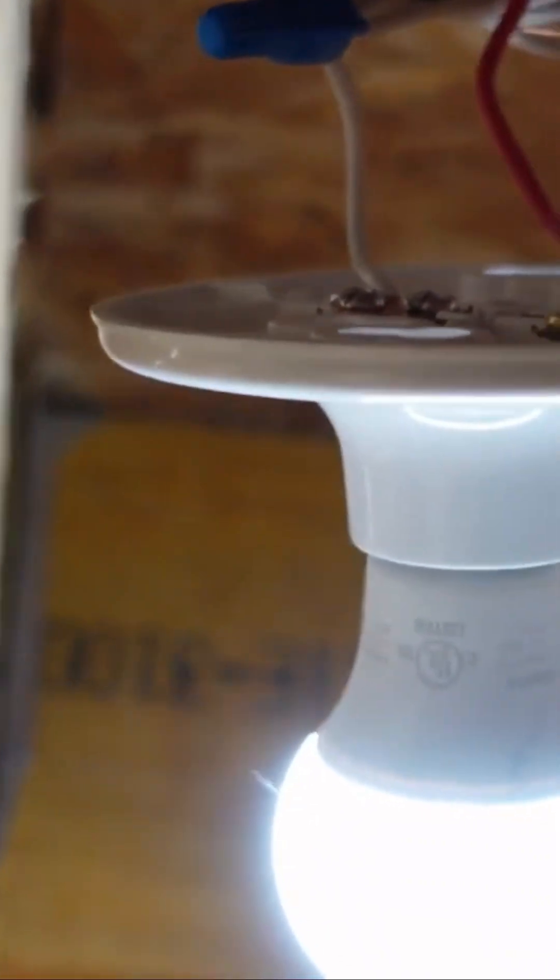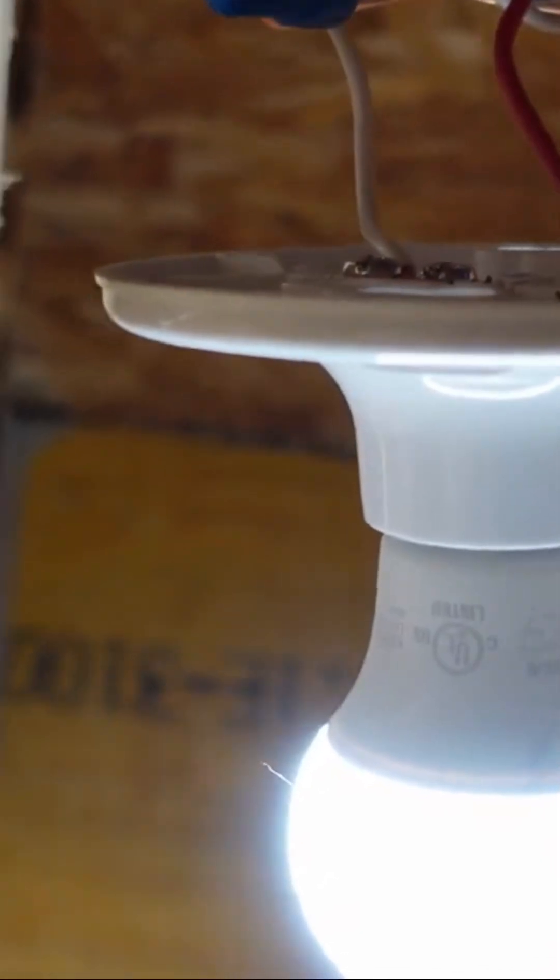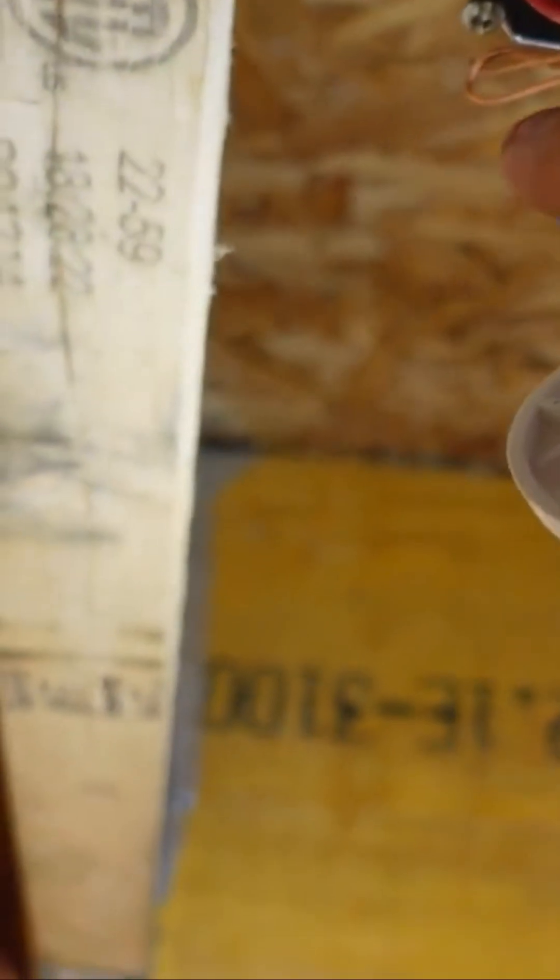Inside the box, you can see I have done my grounds up. The neutrals are all tied together which go on with the tail to the back of the light.